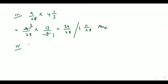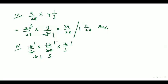Let's move to the fourth part. The fourth part is 5/6 into 36/25 into 2/3. Let's check how to cancel it: 5 ones are 5, 5 fives are 25, 2 ones are 2, 2 threes are 6, 3 ones are 3, 3 ones are 6, 3 ones are 3, 3 fours are 12. We are left with 4/5. So 4/5 is the answer of the fourth part.